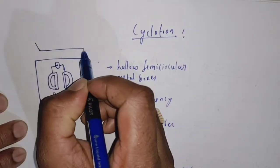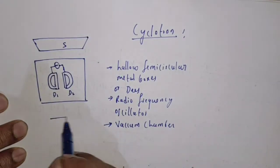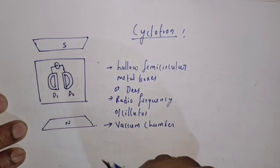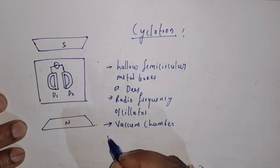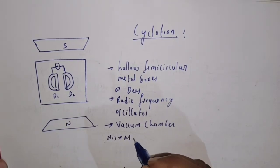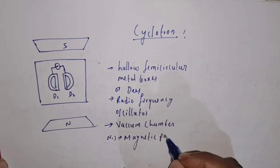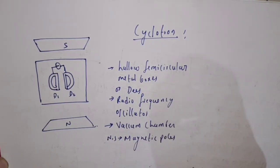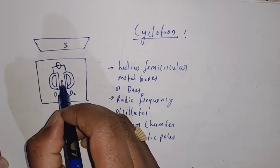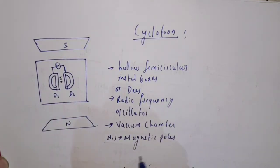This complete setup is placed between two magnetic poles — one is the south pole and another is the north pole. In between the two D's, an ion source is placed, denoted by I.